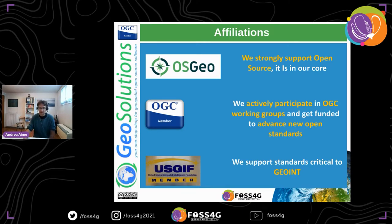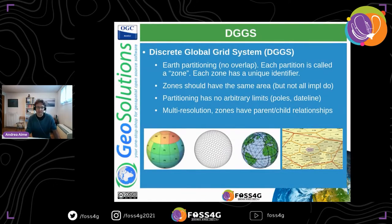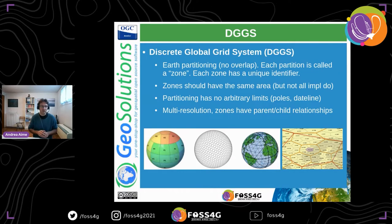Now let's talk about DGGSs. First, we need to understand what I'm talking about, because when I first got an introduction to them my head was spinning — I hope yours doesn't. A discrete global grid system is a partitioning of the earth into areas called zones, and each zone has a unique identifier. It could be as easy as P1, S2, D123, or it could be something really hard to understand, like an exact decimal number like the ones used by H3.